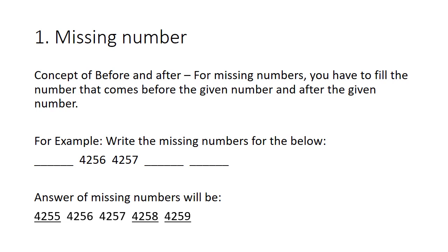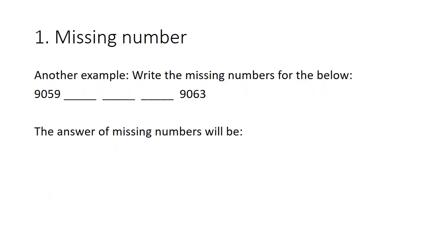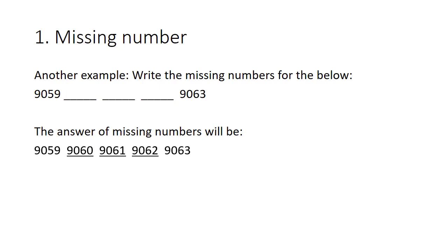Have you understood? Should I explain it again? Another example: write the missing numbers for the below: 9,059, dash, dash, dash, 9,063. Similarly, the numbers that come after 9,059 and before 9,063 are 9,060, 9,061, and 9,062. So the answer of missing numbers will be 9,060, 9,061, 9,062.